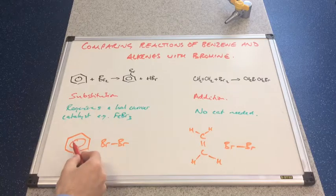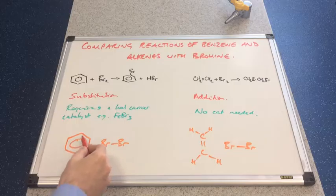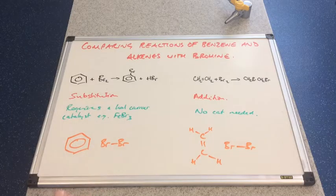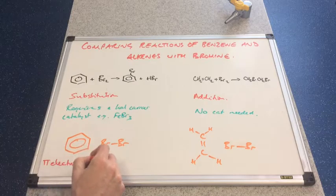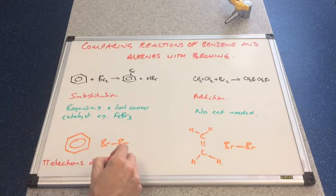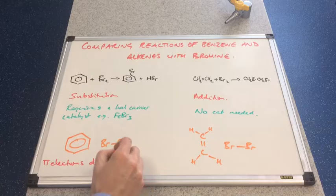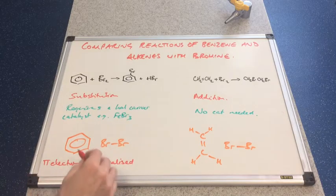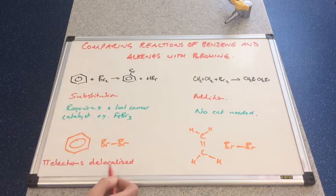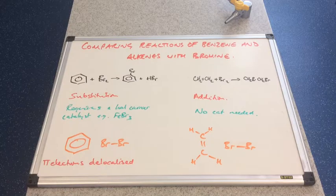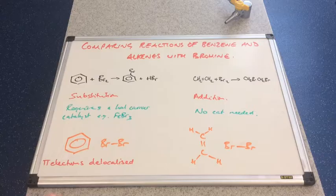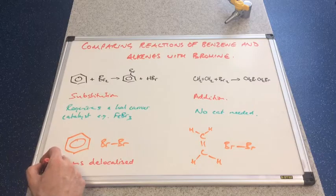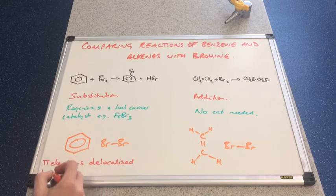So in a benzene molecule, the pi electrons are delocalized. And so because of that, they are spread out. Remember, delocalized means shared between more than two carbons. So they are spread out across the molecule and so the electron density is lower.